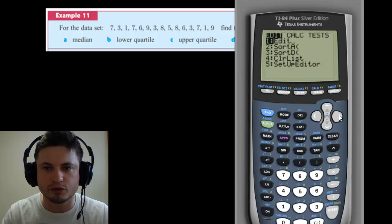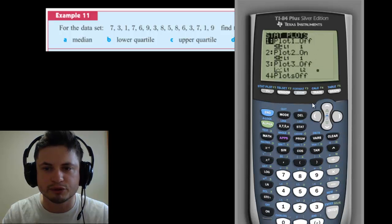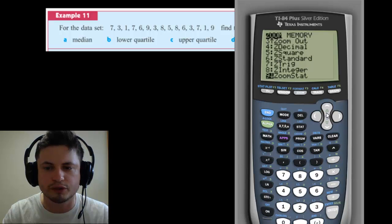Basically, stat, enter your values, click on one variable stats, then go to stat plot, enable stat plot, and graph it. And if you don't see it, make sure that you go into zoom stat.